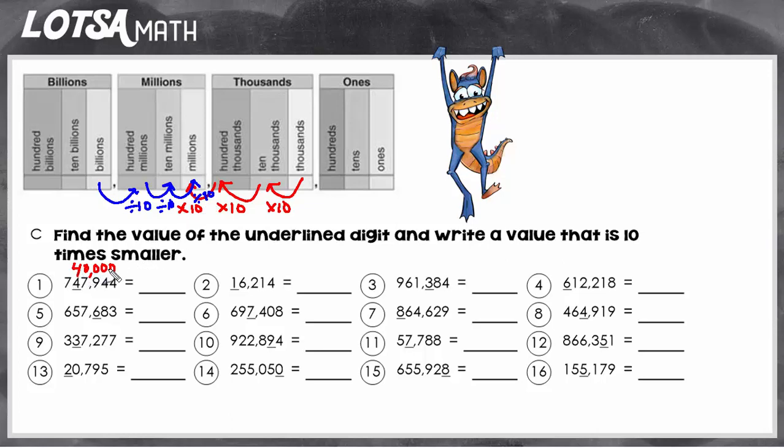So instead of having to do forty thousand divided by ten, we can use place value. Notice that the four is in the ten thousands place. So if we want to divide it by ten and make it smaller, we're just going to shift the whole number to the right. So I just need to move this four one place over. So instead of it being in the ten thousands place, I just want it in the thousands place. So now the value has been made ten times smaller, from forty thousand to four thousand, just by shifting the digit from the ten thousands place to the thousands place.